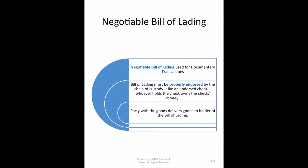There are a couple types of bills of lading. The only one we're focused on here is the negotiable bill of lading, meaning it has been properly endorsed through the chain of custody. 'Negotiable' is a legal term referring to what we call commercial paper. The easiest example to relate this to something familiar would be a checking account.